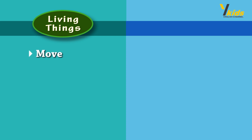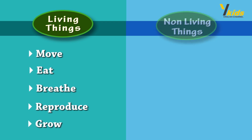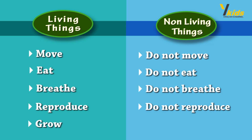Living things move, eat, breathe, reproduce, and grow. Non-living things do not move, do not eat, do not breathe, do not reproduce, do not grow.